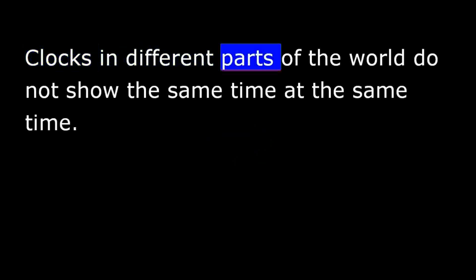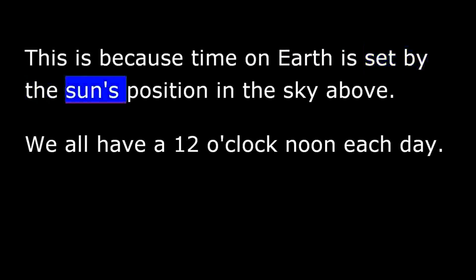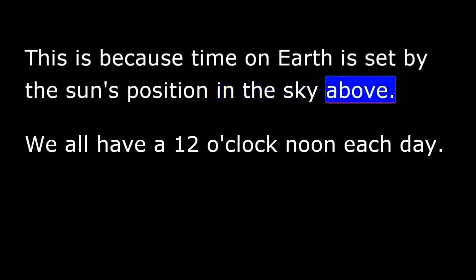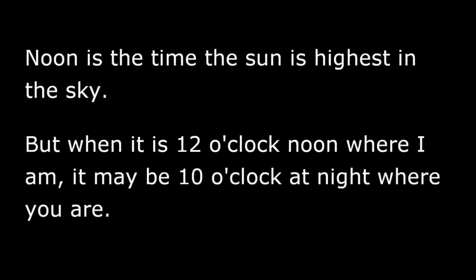Clocks in different parts of the world do not show the same time at the same time. This is because time on Earth is set by the sun's position in the sky above. We all have a 12 o'clock noon each day. Noon is the time the sun is highest in the sky. But when it is 12 o'clock noon where I am, it may be 10 o'clock at night where you are.